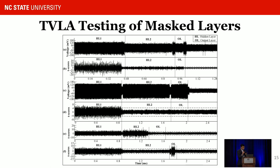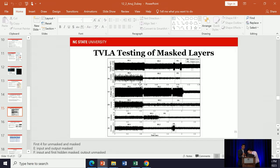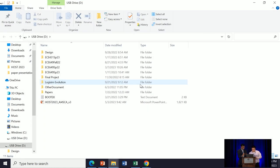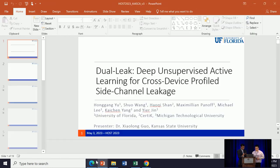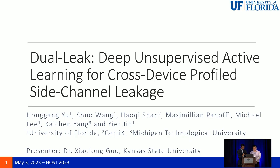Thank you, Anju, for your nice talk. Our final talk before lunch is Dual Leak. Let's welcome our third speaker. Unfortunately the third speaker couldn't travel because of his final exam, and other authors also couldn't travel because of other duties. Dr. Chiaolong Guo is volunteering to present this paper — he is not the author but is helping the authors present. Dr. Guo is an assistant professor in the Department of Electrical and Computing Engineering at Kansas State University, earning his PhD from University of Florida in 2019. His research expertise includes formal verification, cross-layer security, and hardware-software co-verification.